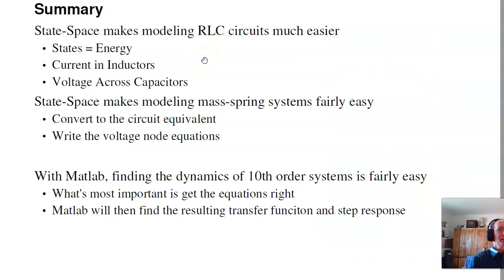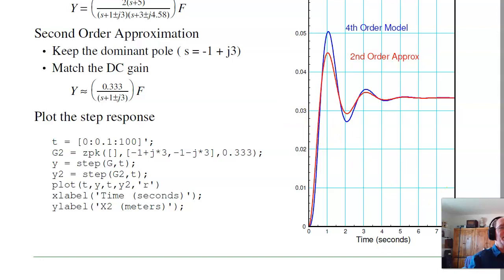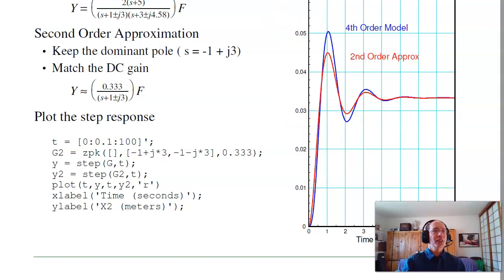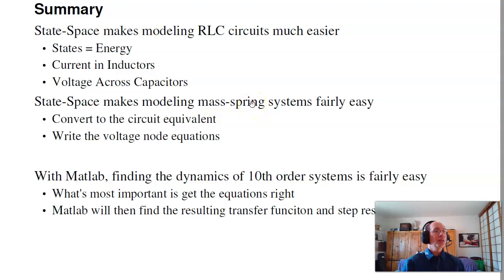In summary, state space makes modeling RLC circuits much easier — the states are the energy in the system: current through inductors and voltage across capacitors. State space also makes modeling mass-spring systems fairly easy — just convert to a circuit equivalent and write the node equations. With MATLAB, I can find the dynamics of 10th-order systems pretty easily. What's most important is to get the equations right. If I get the equations right, MATLAB can input the system, find the transfer function, and find the poles. That's lecture number three for ECE 463 Modern Control, System Modeling and State Space.